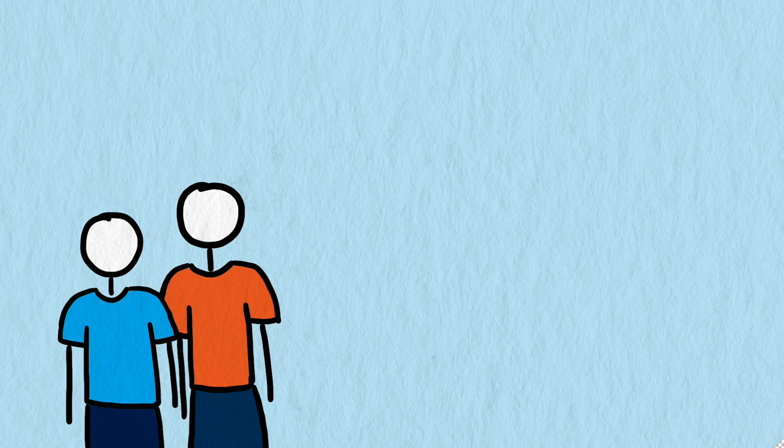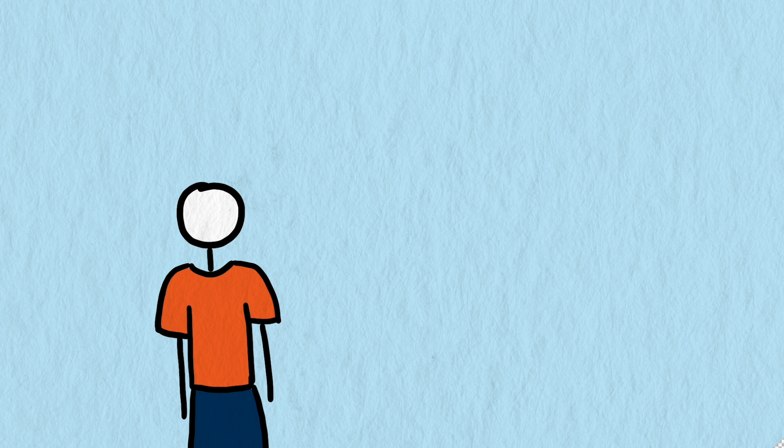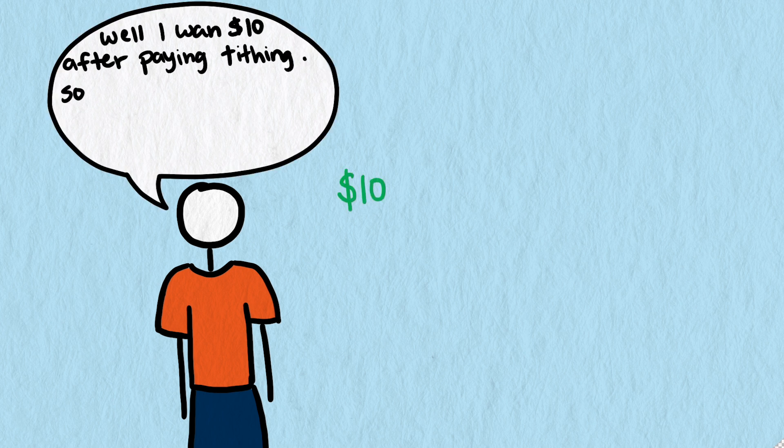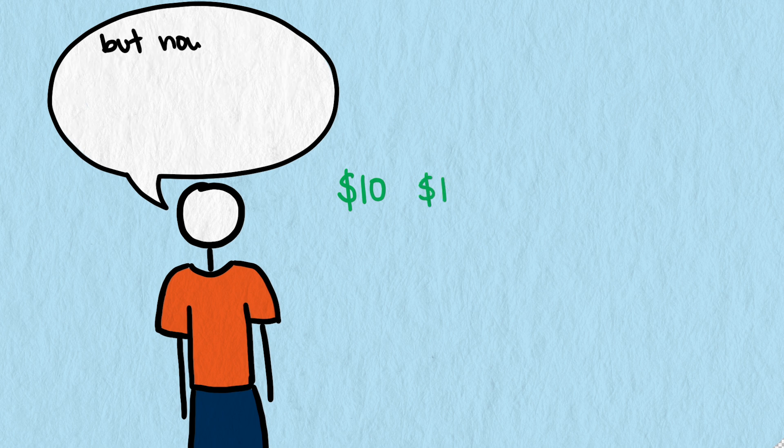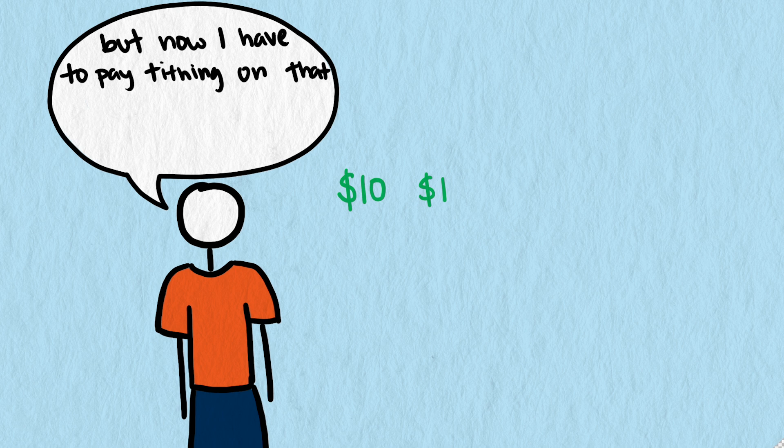Each separately thought the same thing, but I'll use the $10 bid as an example. Well, I want $10 after I pay 10% tithing, so I need another 10% of $10, so I need another dollar. But now I have to pay tithing on that dollar, so I need to earn another 10% of that dollar, so 10 cents.